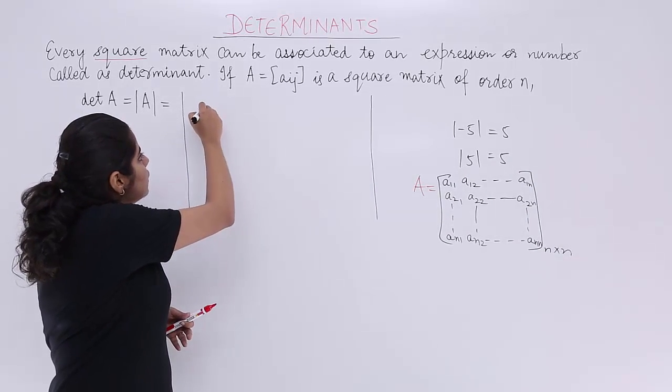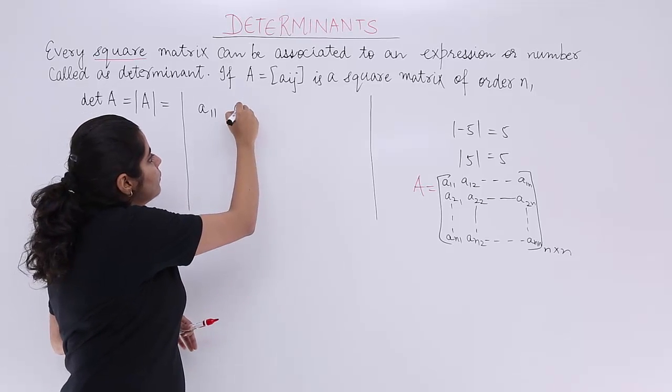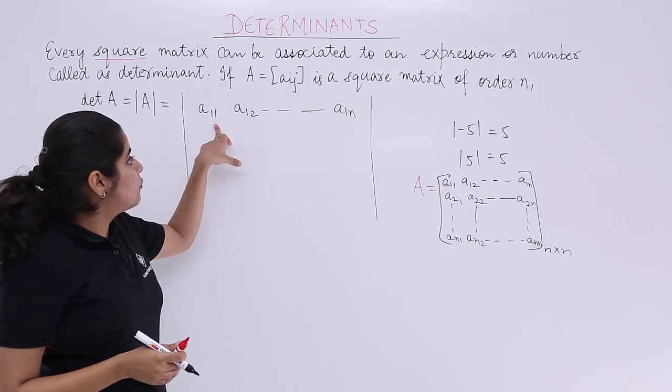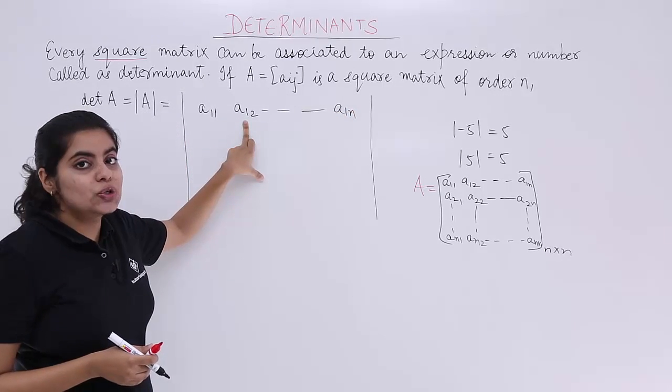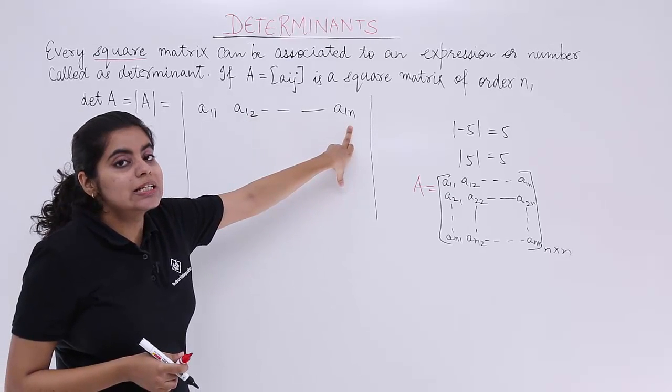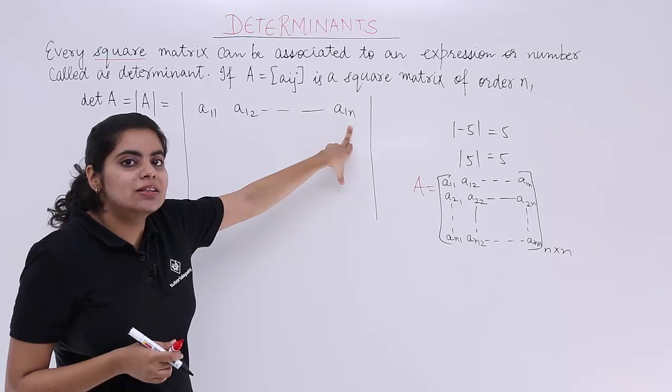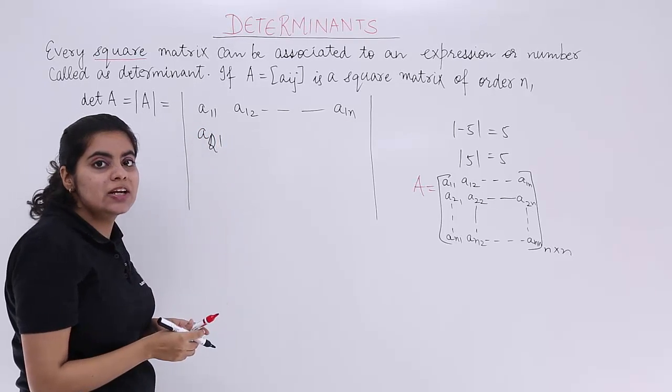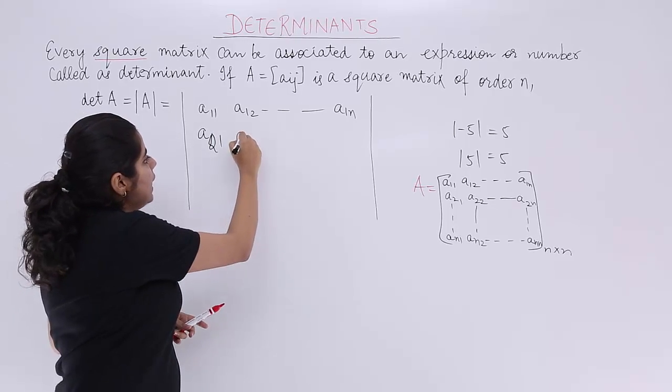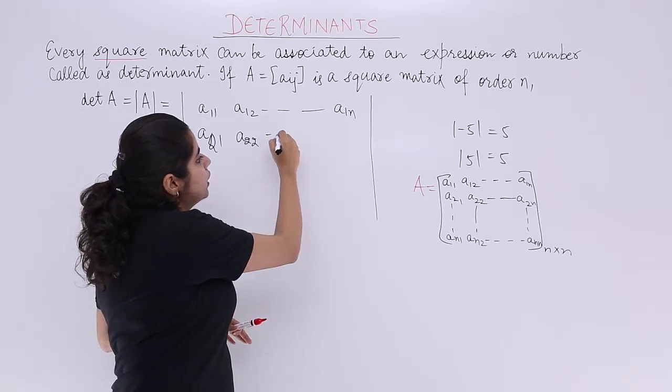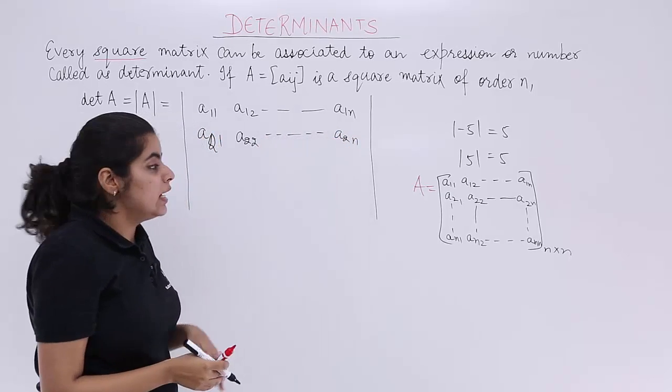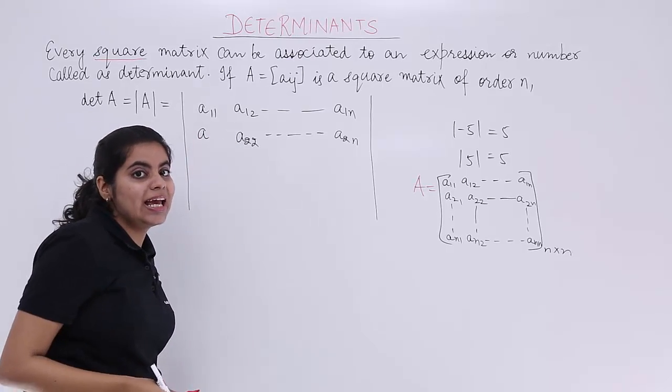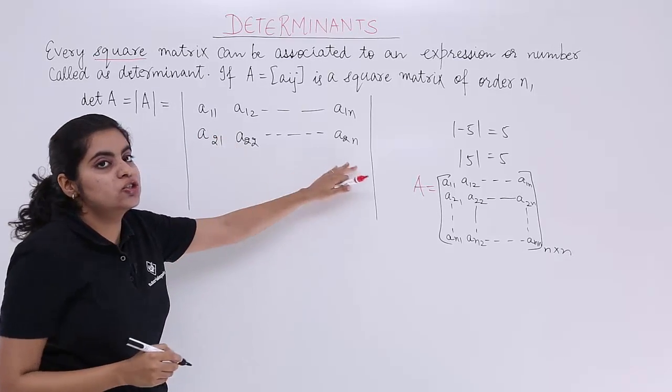What we write is: the general matrix will be written A11, A12 and so on up till A1N—that means first row first column element, first row second column element and so on till first row Nth column element. Similarly we will be having A21, that means second row first column, A22 and so on up till A2N.